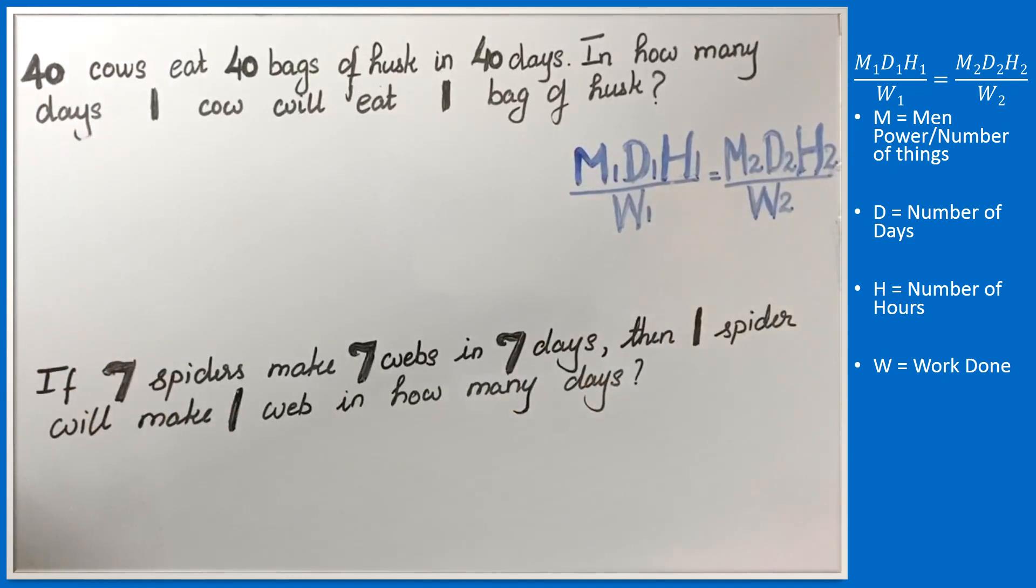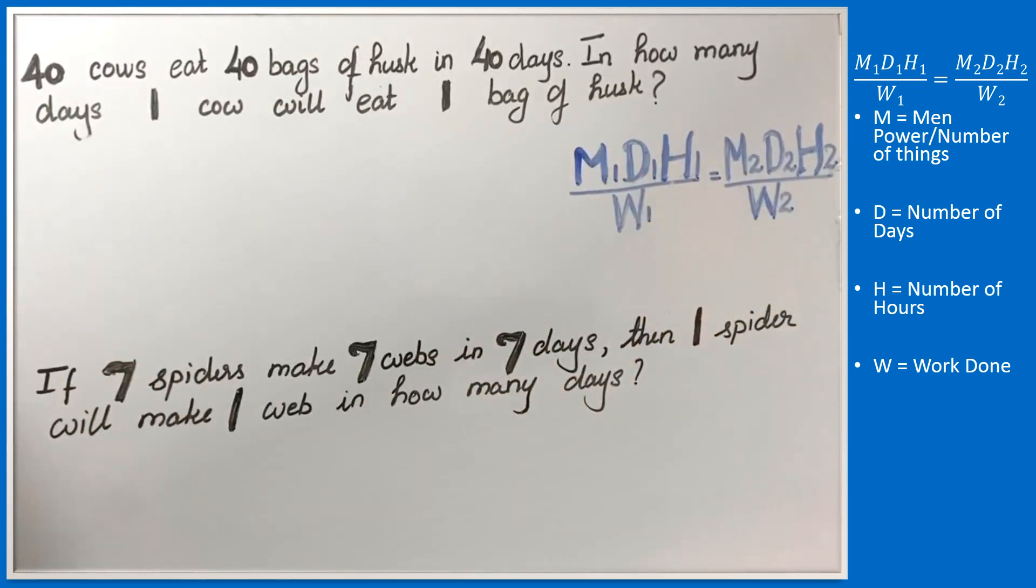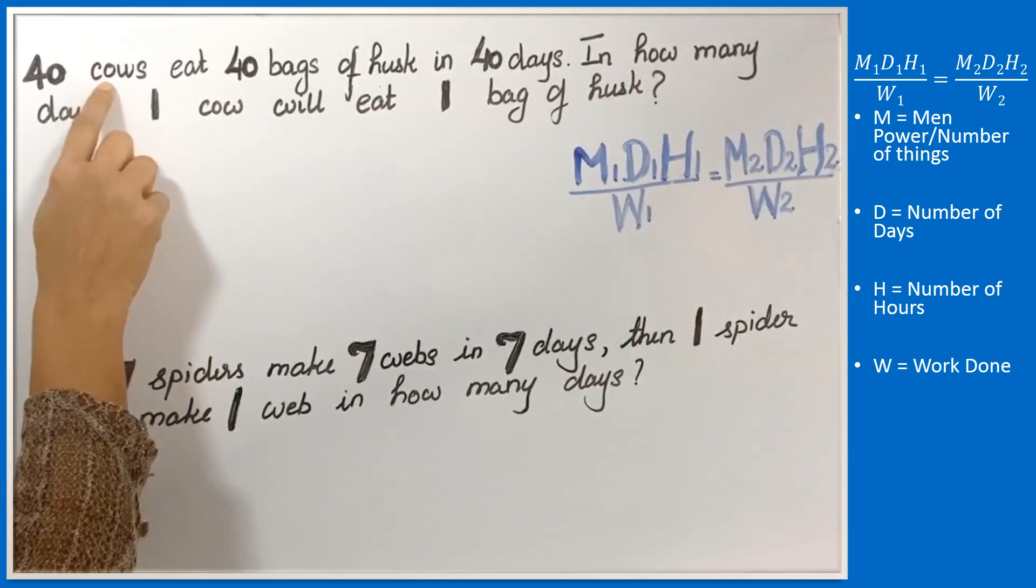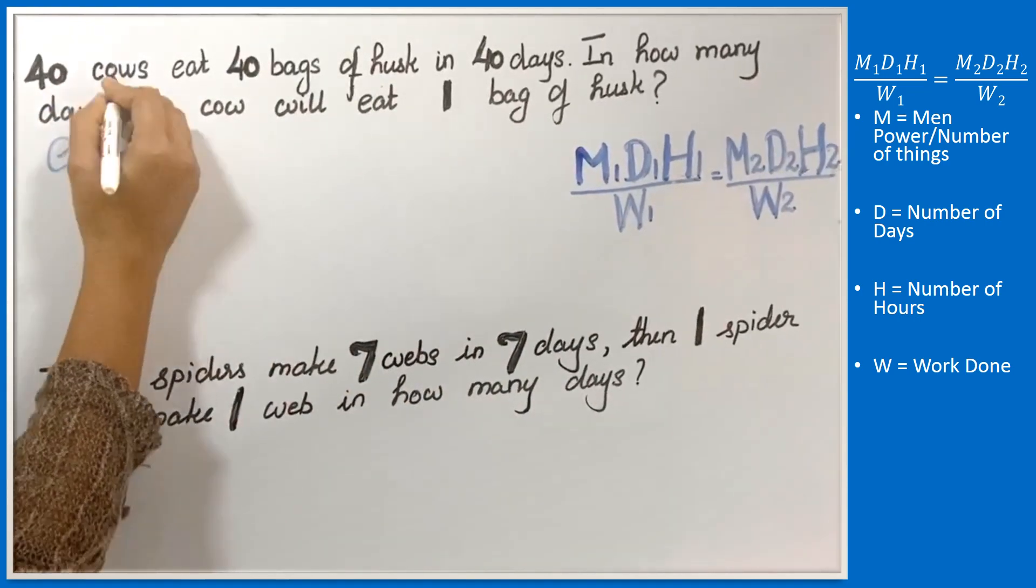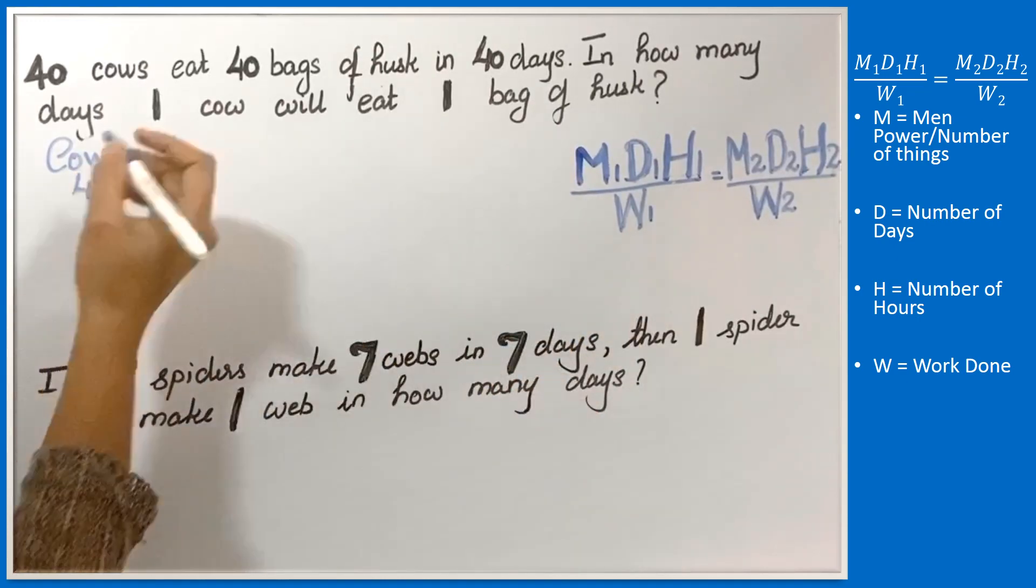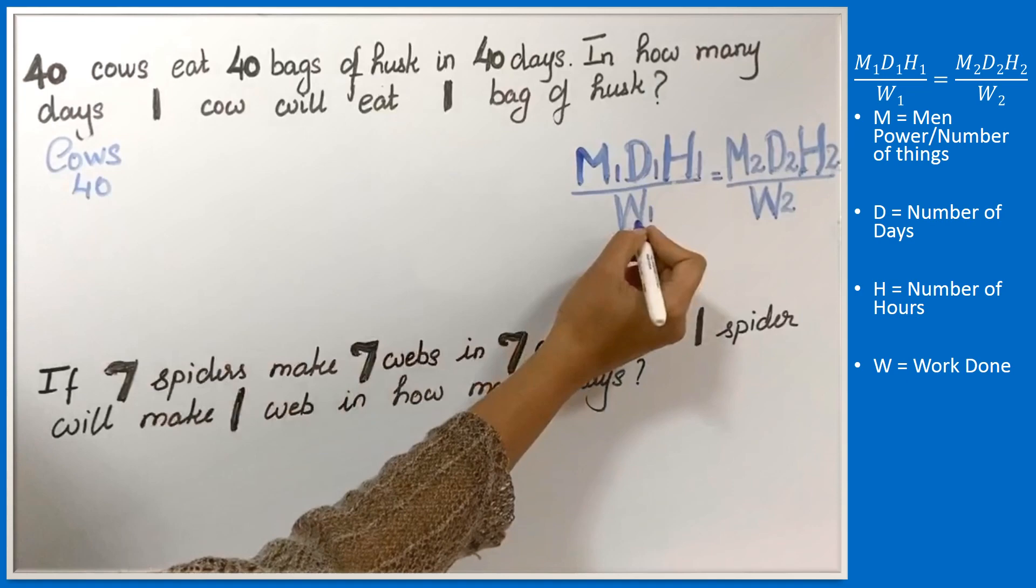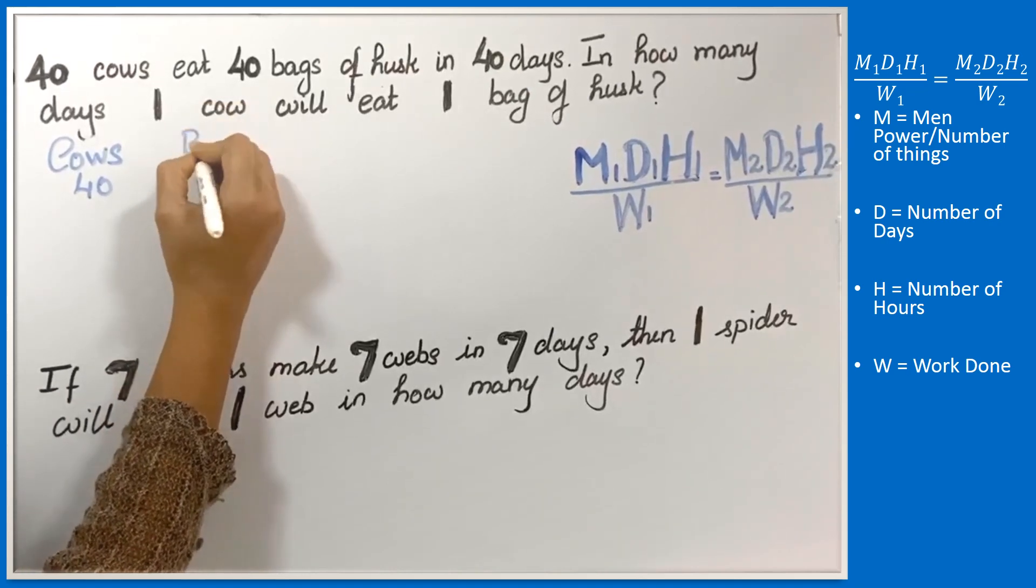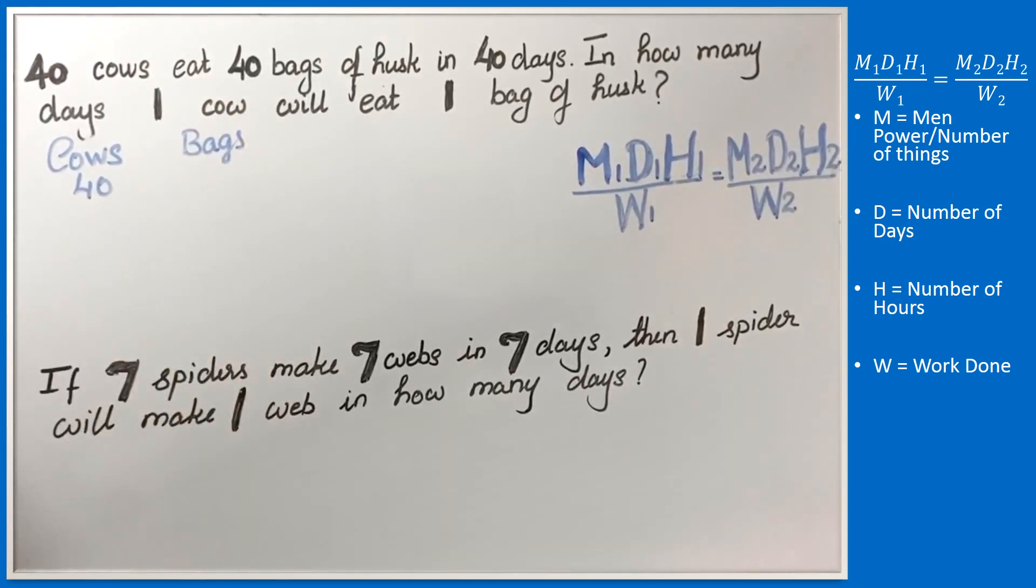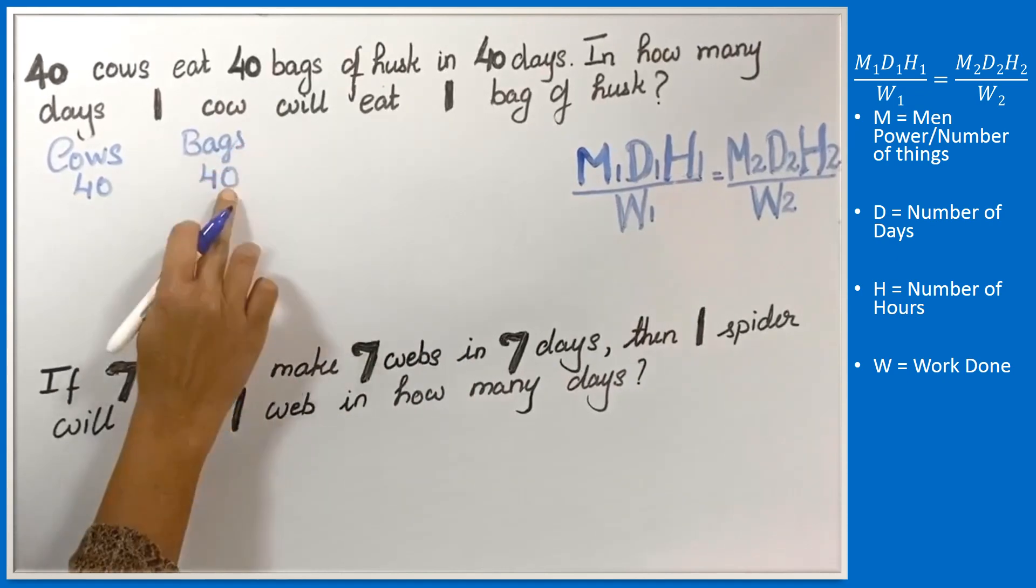What is M1? M1 or M2 is the number of men or the number of things. Here the number of cows is M1 - 40 cows. The cows will eat 40 bags of husk. W1 is the work done - what it is doing is eating bags of husk. So W1 is how many bags it is eating - 40 bags.